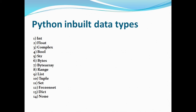Coming to the built-in data types of Python — just like every programming language, Python has primitive and built-in data types that we use in applications for storing values and performing computations. Python supports 14 different built-in data types. We will be making use of these built-in data types for our applications.